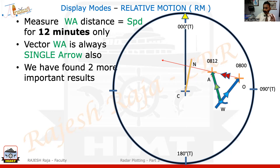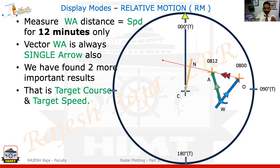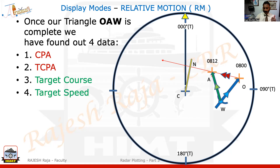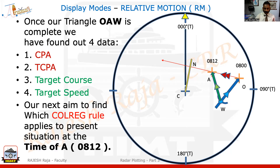So now I have two more important data: target course and target speed. If I summarize through the third video, we have found four data — namely CPA, TCPA (from the RML, which is OA), and target course and speed (from the green WA vector). The blue vector, which is mine, was already given in the question. This is the first four data from the triangle. The moment we finish the triangle, we need to find the COLREGS requirements — that finding is always done after finishing the triangle, which we finished at A, at 0812. That is why reporting is done always at 0812.